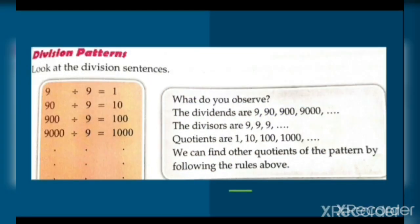Division pattern: 9 ÷ 9 = 1, 90 ÷ 9 = 10, 900 ÷ 9 = 100, 9000 ÷ 9 = 1000. Hum dekh sakte hain ki dividend 10 times barhta ja raha hai — 9, 90, 900, 9000 — jabki divisor 9 hi rehta hai. Toh answers ka pattern hai: 1, 10, 100, 1000. Agar 90,000 ÷ 9 hoga toh answer 10,000 hoga.